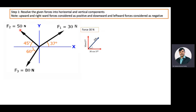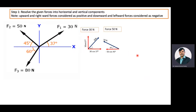Then we will resolve the 50 Newton force into horizontal and vertical components. This 50 Newton force is making an angle of 45 degrees with the x-axis. The horizontal component becomes minus 50 cos 45 degrees, because the component is travelling in the horizontally left-hand direction, so it is negative. The vertical component becomes plus 50 sin 45 degrees, because the vertical component is acting vertically upwards, so it is positive.